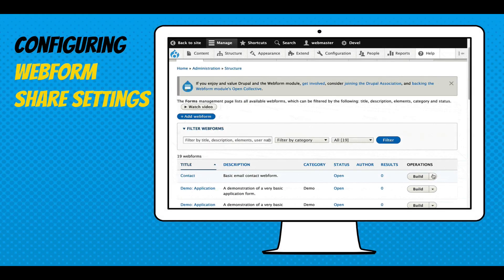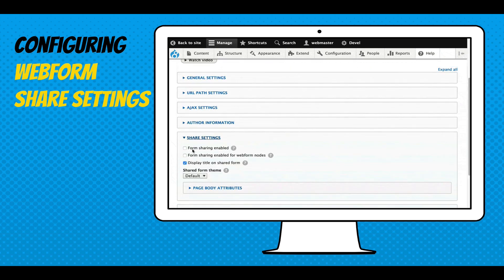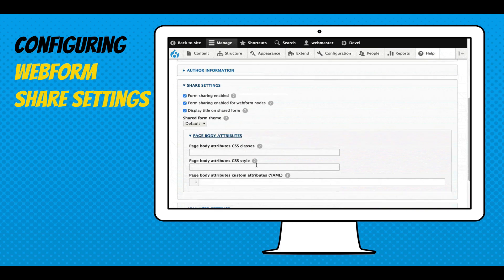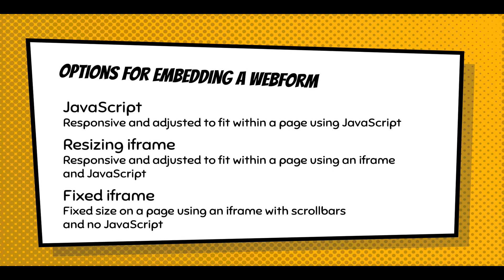You can also go into an individual form, go to settings, scroll down, and you'll see the share settings. You can enable it for a single form, set custom attributes, and turn the page title on or off. For embedding, you have three options. JavaScript is the recommended way — it's just a little script tag, and what it does is drop in an iframe with some extra JavaScript. You can also get that code directly, which is the iframe and the JavaScript that sets up the iframe. And if you don't want to use JavaScript, you can have a fixed iframe, which will in most cases cause some scrolling issues because you'll have scroll bars on the iframe.